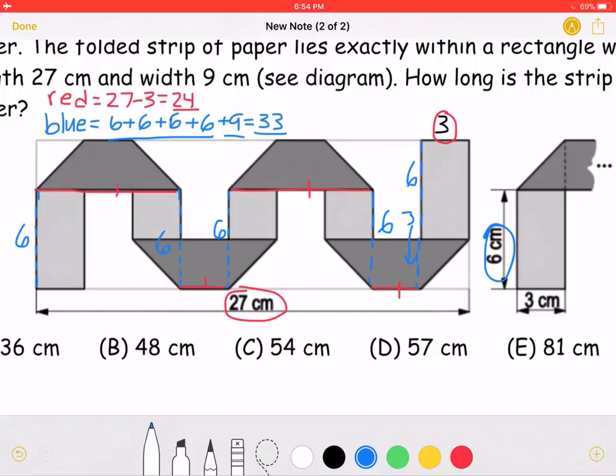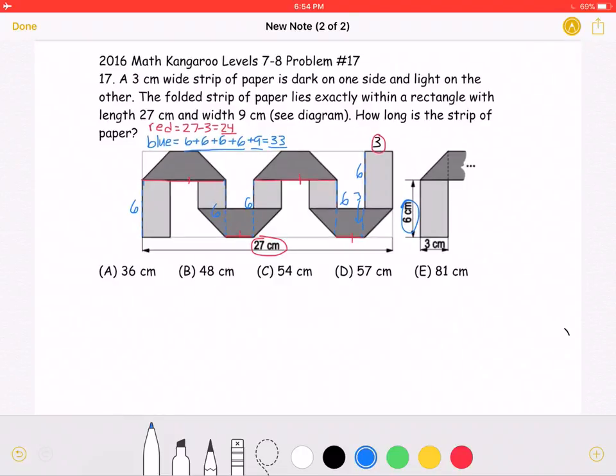We must add 24 and 33 together to get the length of the entire strip. If we add 24 and 33, we will get 57, which is answer choice D.